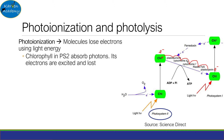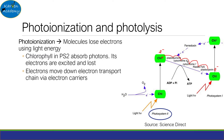Due to the scope of A-level, you only need to know the name and what it does, and nothing more. Once they absorb photons — i.e. particles of light — their electrons get excited and are lost. These electrons travel down the electron transport chain via electron carriers.